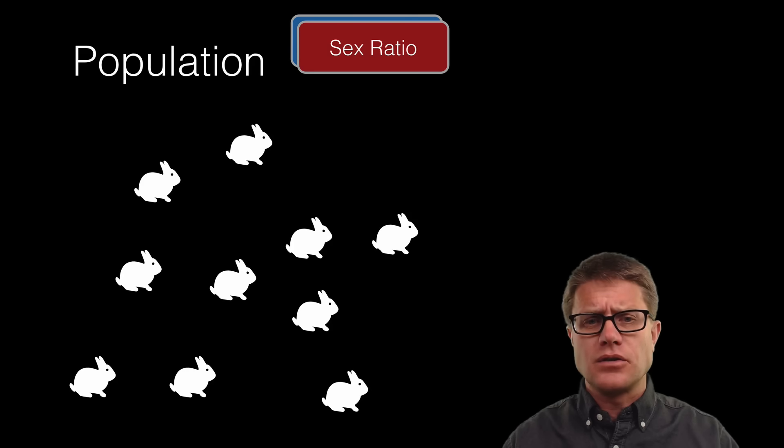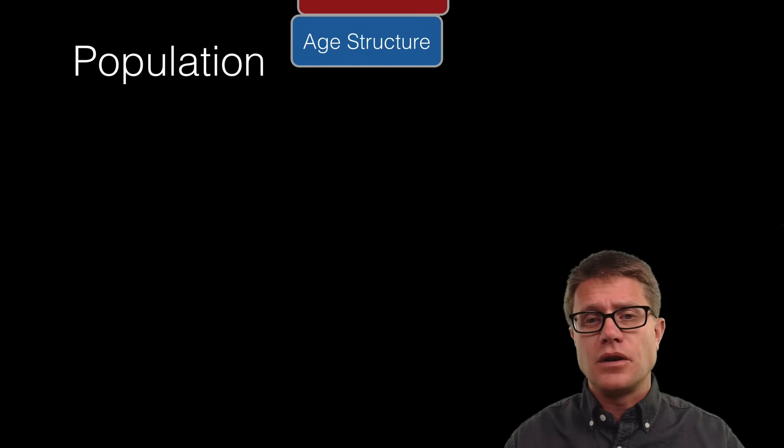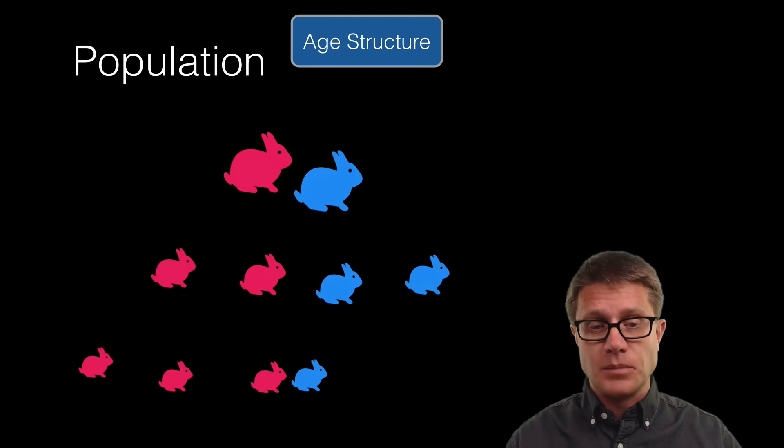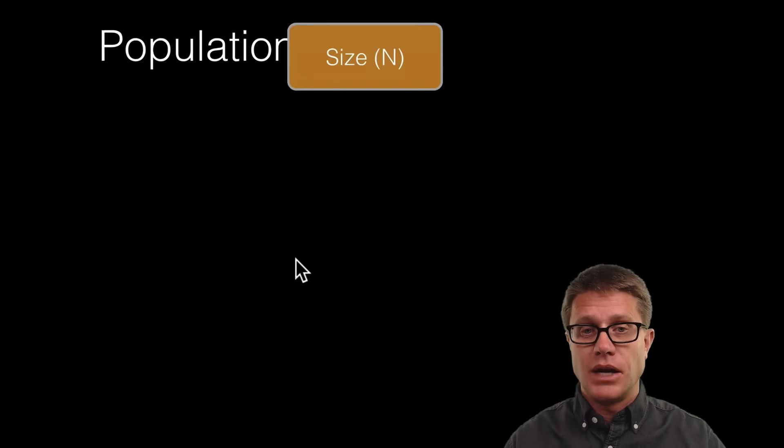And we could also look at their sex ratio. So how many of them are males and how many of them are going to be females. And we could expand that to look at what is called their age structure. Not only what is their gender, but also how old are they. So we could organize them like this, where this is going to be our first year female rabbit, second year and third year. And we can do the same thing with males.